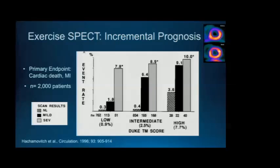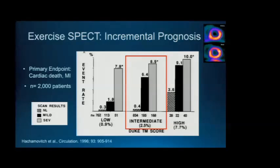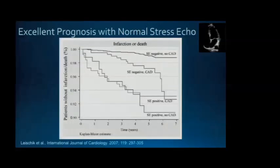Across all Duke Treadmill classifications, the stress SPECT can reclassify a patient's level of risk. This becomes most helpful in the intermediate-risk category, where the majority were reclassified to low risk, providing reassurance, while a group found to have ischemia on stress SPECT had much worse prognosis. This has also been shown in the setting of stress echo.